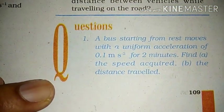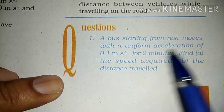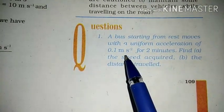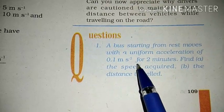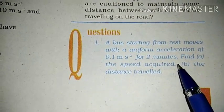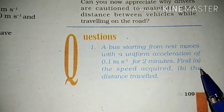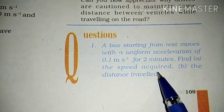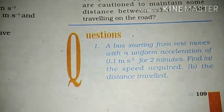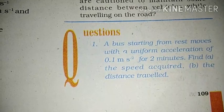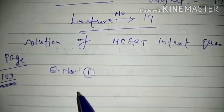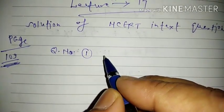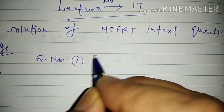Question number one states: a bus starting from rest moves with a uniform acceleration of 0.1 meter per second square for two minutes. Find two things — (a) the speed acquired, and (b) the distance traveled. We shall convert the statement into physical quantities.